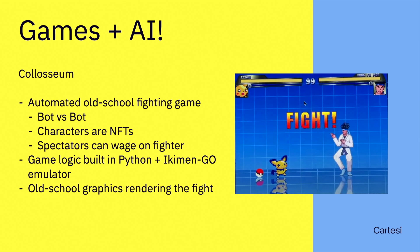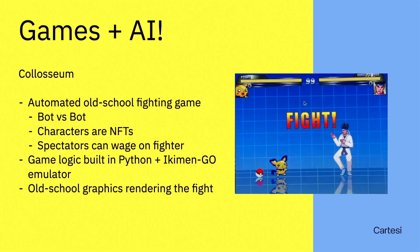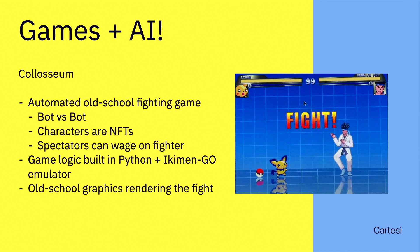From a Boston hackathon, developers ported Ikeman Go — a Mugen-like fighting game engine written in Go — and called it from Python. Characters like Kung Fu Guy, Pichu, a tennis player, and a delivery person fight automatically. Before the fight, you can wager on a character. The fight runs inside the Cartesi machine, and then a classic old-school graphics video is rendered for you to watch — kind of like MMA for video game people.